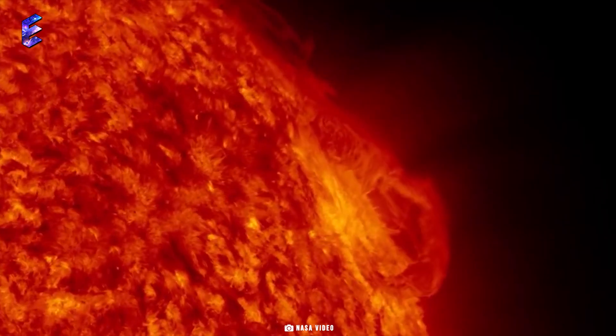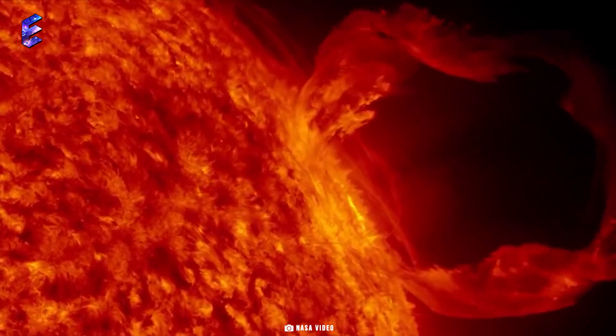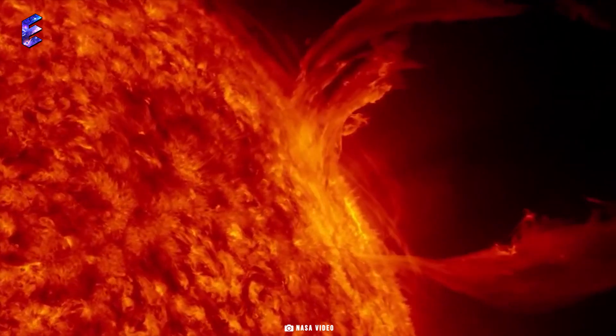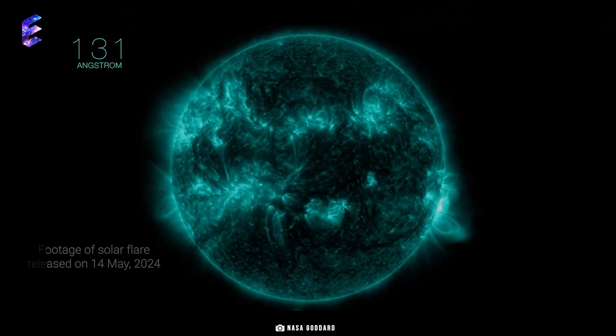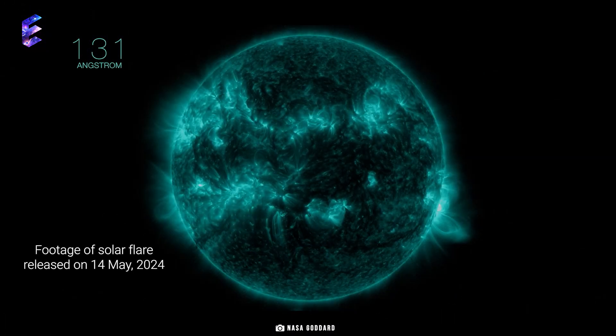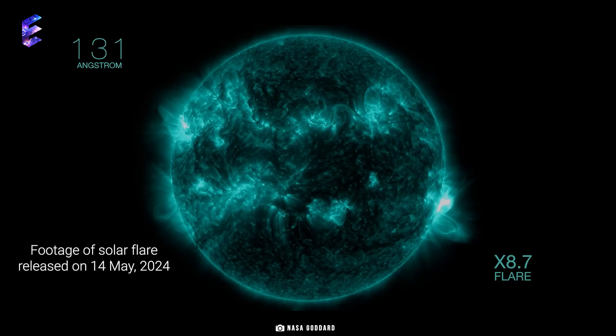Billions of tons of coronal material is expelled at speeds reaching several million miles an hour in a spectacular explosion during a CME. CMEs are often associated with solar flares, which are bursts of electromagnetic radiation in the Sun's atmosphere.